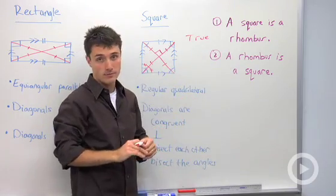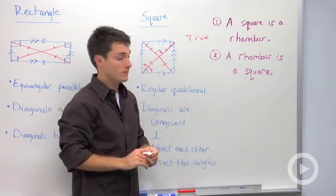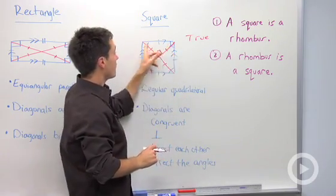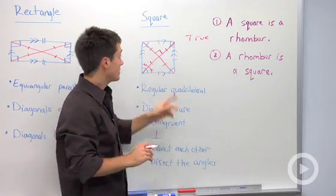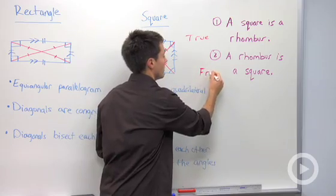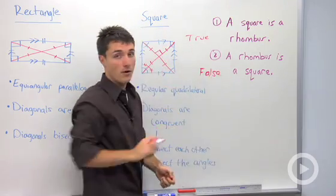A rhombus, however, is not equiangular. The rhombus does not have four angles that are all congruent, which is one of the facts about a square. So that's why this one will be false.